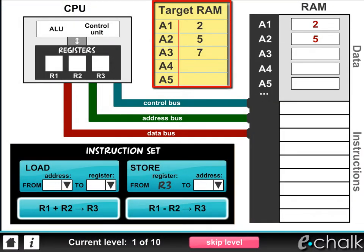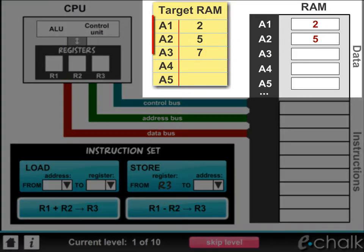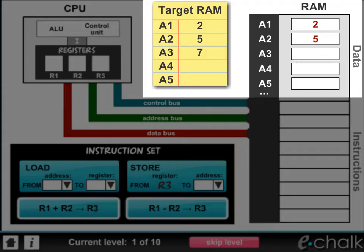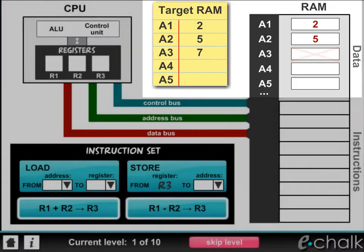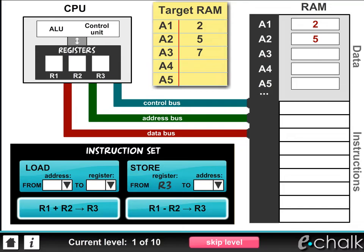The sheet of notepaper here, with 'Target RAM' written at the top, shows you what your challenge is. You must construct a program that makes the data in RAM identical to the data shown on the target RAM notepaper. So we can see that the first three addresses of RAM should contain a 2, 5, and a 7. We've already got the 2 and the 5 — it's the 7 that's missing. So we need to construct a program using the instructions in our instruction set to solve this problem.